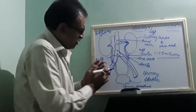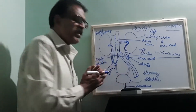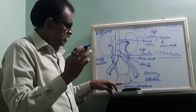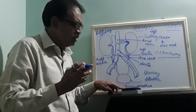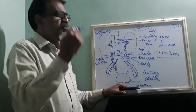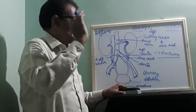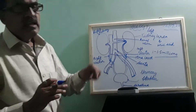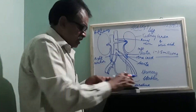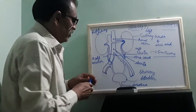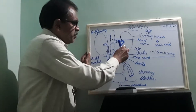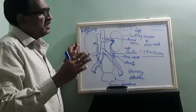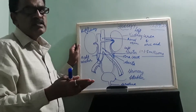After the bladder fills up, the stored urine must be removed. It is passed through the urethra in the form of urine. This is how the process takes place. Now let us look at what is present inside the nephron within the kidney.